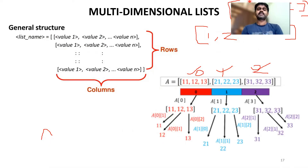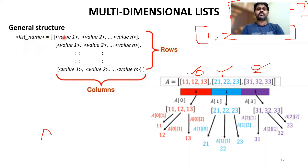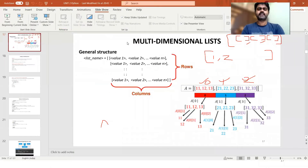Today we're going to discuss multi-dimensional lists. In previous classes we discussed what a list is. A multi-dimensional list is a list within a list — we can have many lists inside a single list. This is the general structure: the list name equals square brackets, and inside those square brackets we place different types of sublists.